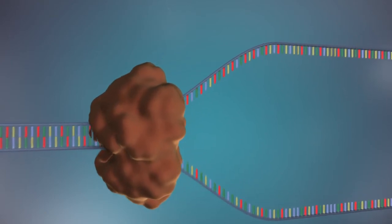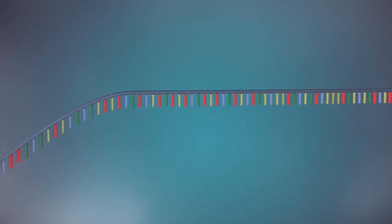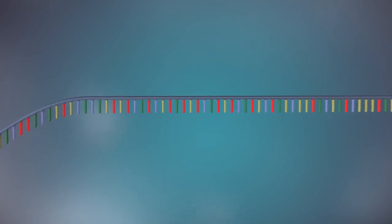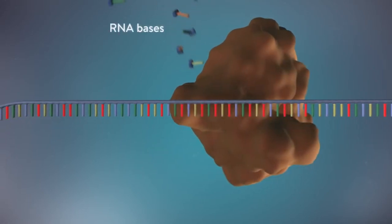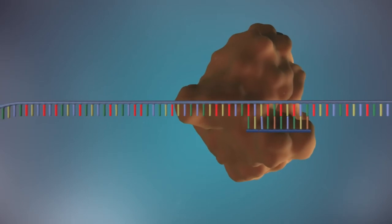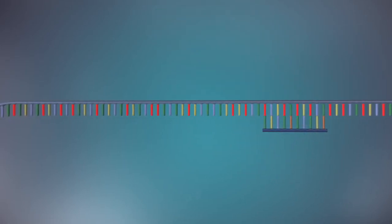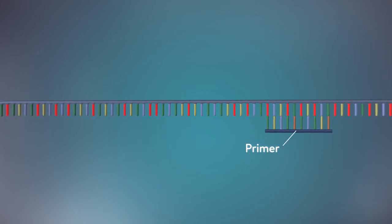The separated strands each provide a template for creating a new strand of DNA. An enzyme called primase starts the process. This enzyme makes a small piece of RNA called a primer. This marks the starting point for the construction of the new strand of DNA.